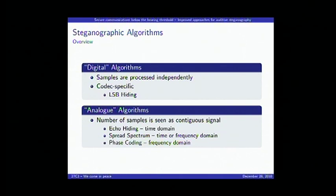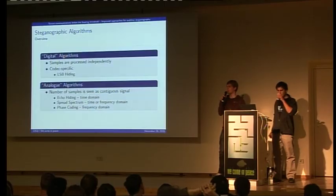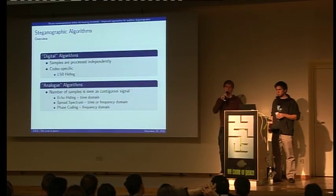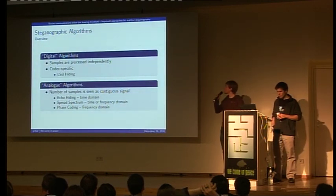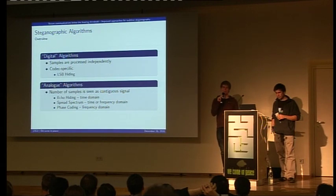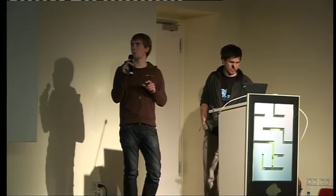Now let's talk about embedding algorithms. We distinguish between digital and analog algorithms. Digital algorithms process bytes or samples independently — for example in LSB hiding, the last bit of every sample is changed according to the secret data without looking at adjacent samples as an audio signal. Analog algorithms take a block of samples, say 100, corresponding to some milliseconds, and process them using signal operations like Fourier transformation.